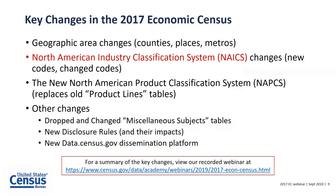Other changes include the way miscellaneous subjects data are released — miscellaneous statistics will begin releasing in November. Another key update is our new disclosure rule. Previously, we were able to publish the number of establishments even if the remainder of the data were subject to disclosure. Under our new rule, we are unable to provide information on disclosed establishments. Finally, the Economic Census is disseminated on our new platform, accessible at data.census.gov, and as of August it is now on the Census Business Builder. For more information on these key changes, please use the provided link to view a webinar that details all the changes.